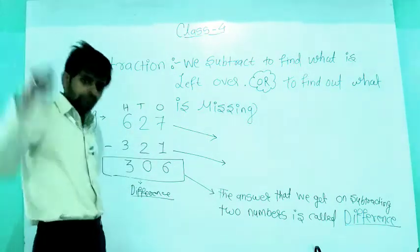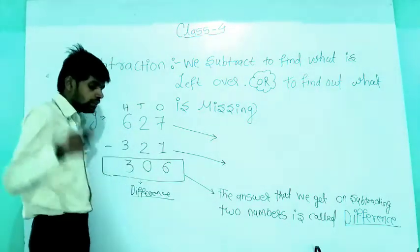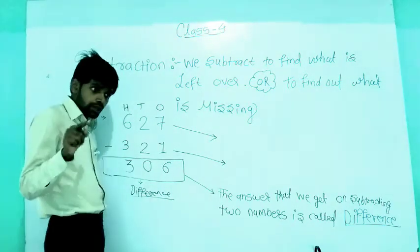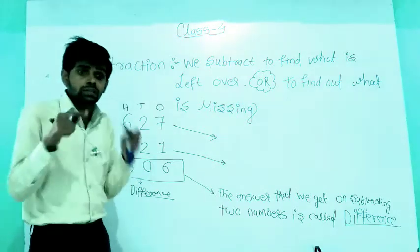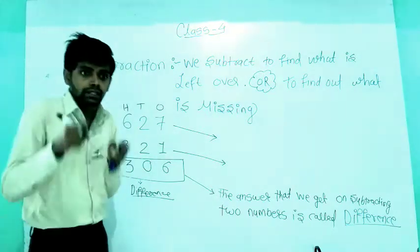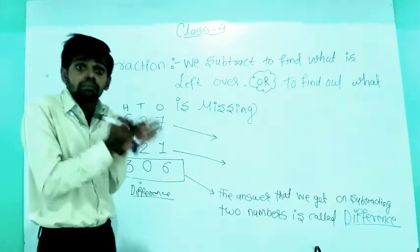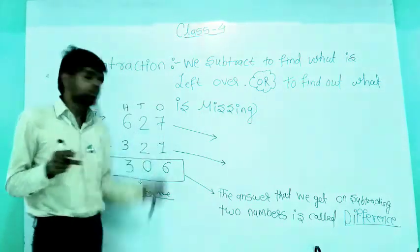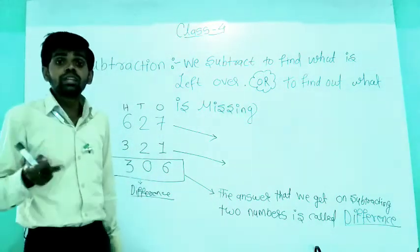Now, 627 is the biggest number — the number from which we are subtracting. The number from which we subtract has a specific name and that is called the minuend.